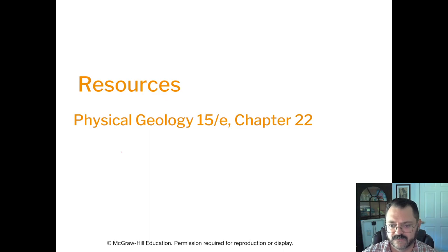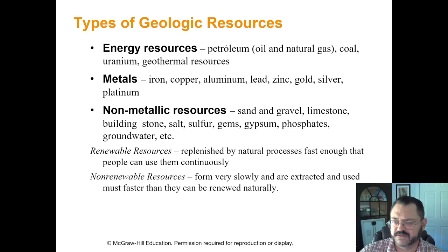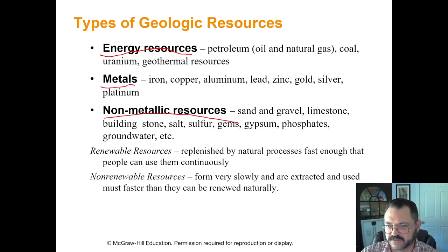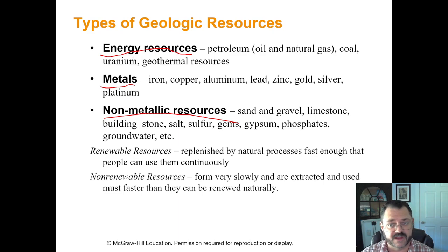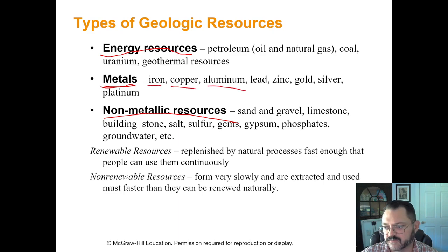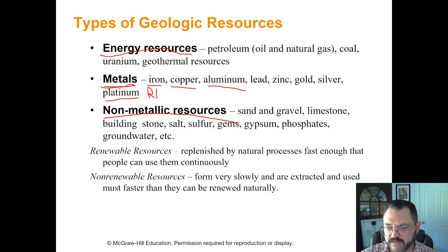We can break up geologic resources into three different types: energy resources, metals, and non-metallic resources. Energy resources are things we consume to generate electricity — petroleum, oil, natural gas, coal, uranium, and geothermal. For metallic resources there's iron, copper, aluminum, lead, zinc, gold, silver, and rarer ones like platinum and rare earth elements.